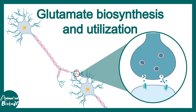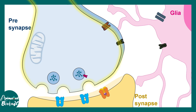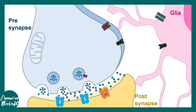Now let us talk about glutamate biosynthesis and utilization — the glutamate-glutamine cycle falls under this broad theme. This is the synapse, and it's a tripartite synapse. You have a presynapse, a postsynapse, and astrocytes, which are glial cells regulating synaptic activity. When the action potential reaches the terminal, glutamate is released into the synaptic cleft and eventually binds to glutamate receptors in the postsynapse.